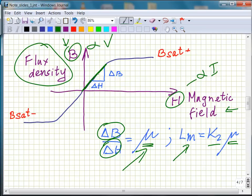Now, as you move up on this curve, you'll eventually reach a saturation region. In this region, the slope here is approaching zero. That is the permeability approaches zero. This means that the inductance is very small.